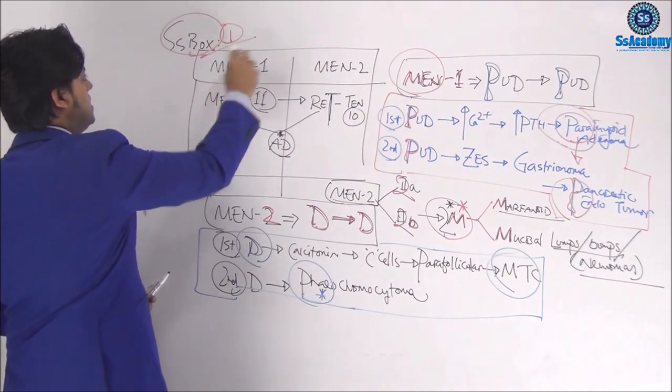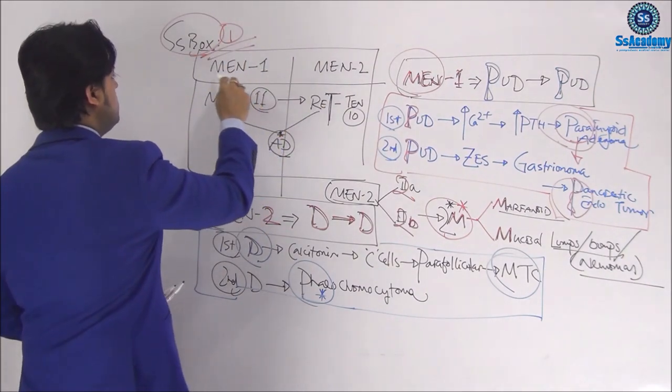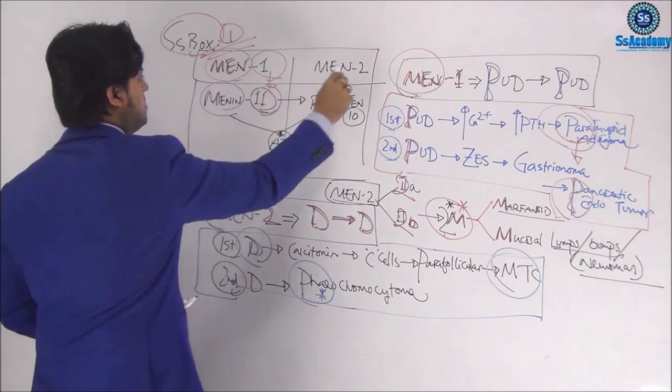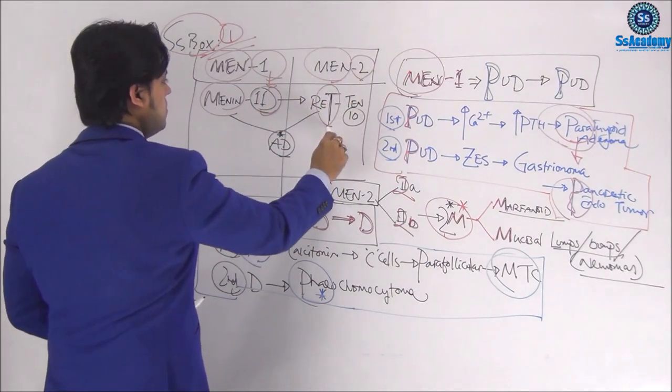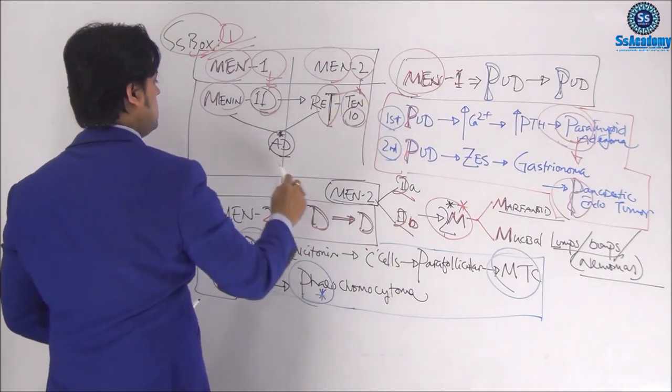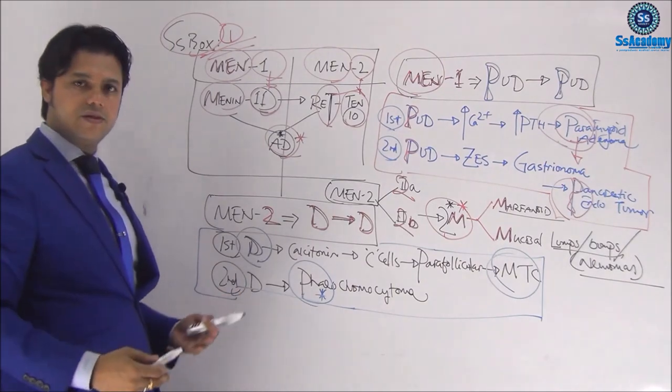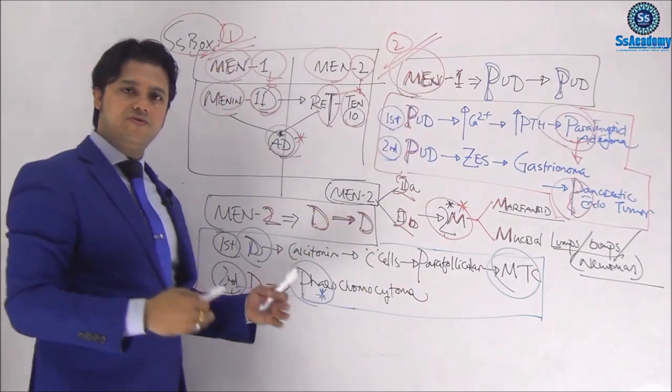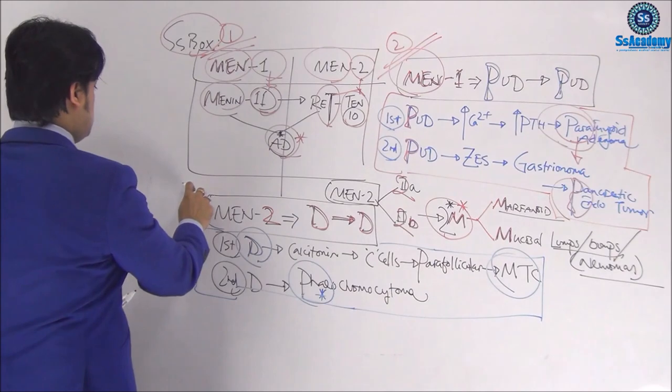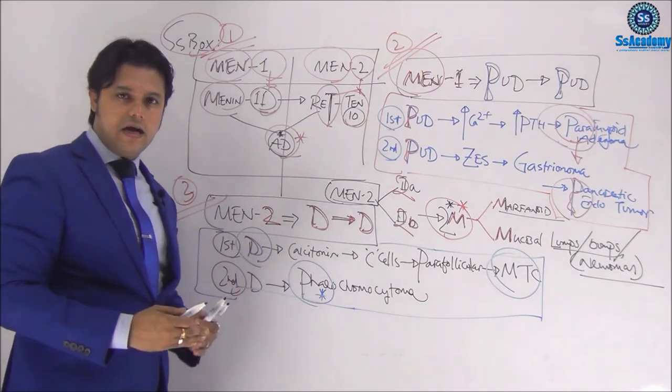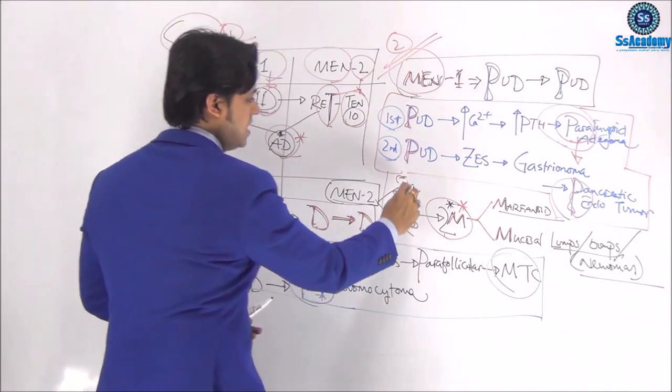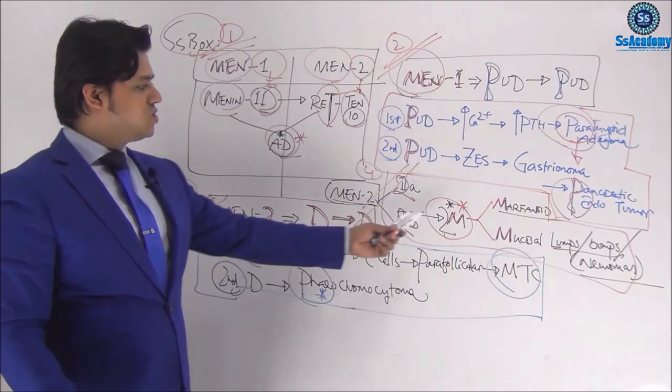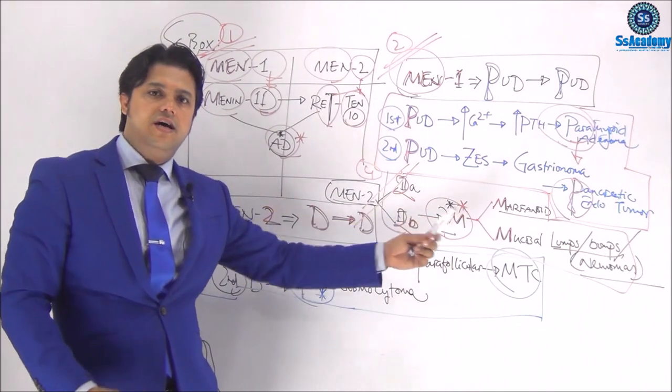So starting with the first box, once again, MEN-1 and MEN-2. MEN-1, menin, 1 for 11. MEN-2, 2 for T, alright, this is RET oncogene, and 2 for 10. Remember, this is 2. And both are autosomal dominant, and this sometimes comes up in your exam. Second box topic, this one. MEN type 1, that is putie followed by putie. And MEN-2, third box, the diarrhea followed by diarrhea. And fourth important box here, that is 2B is 2M features: Marfanoid habitus and mucosal neuromas.